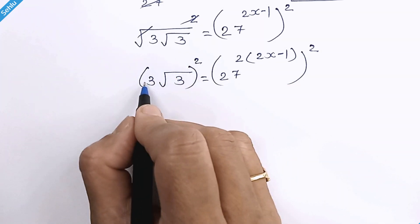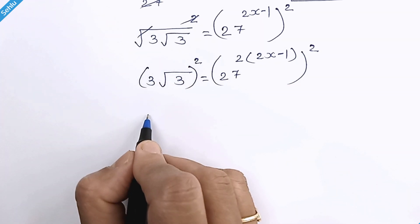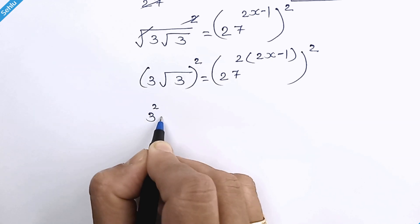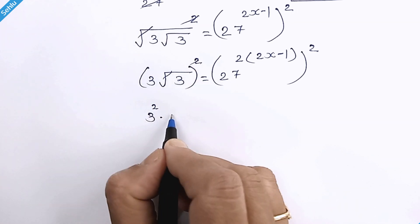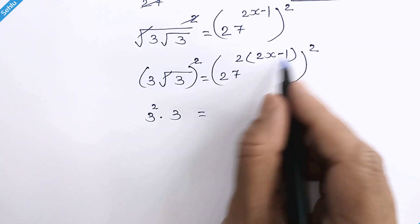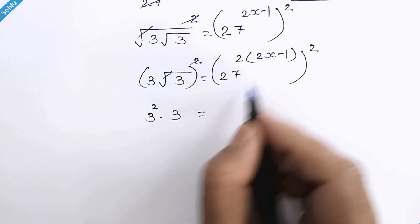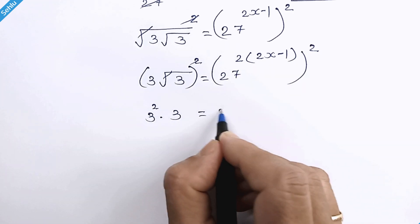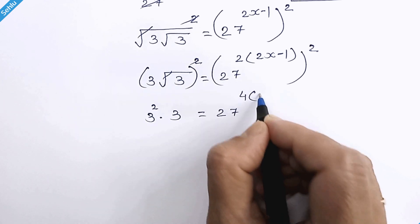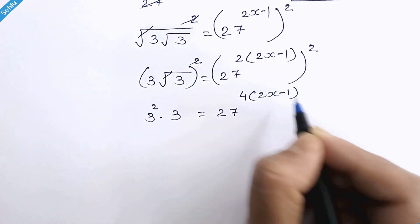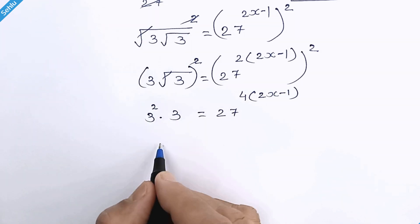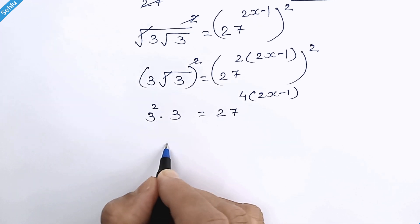Again we will square both sides. The square gives us 3 squared times the square root cancelled out, so we have 3 on one side. We can multiply the exponents, so it will be 27 raised to 4 times (2x minus 1). This is 3 cubed, and 3 cubed is 27.